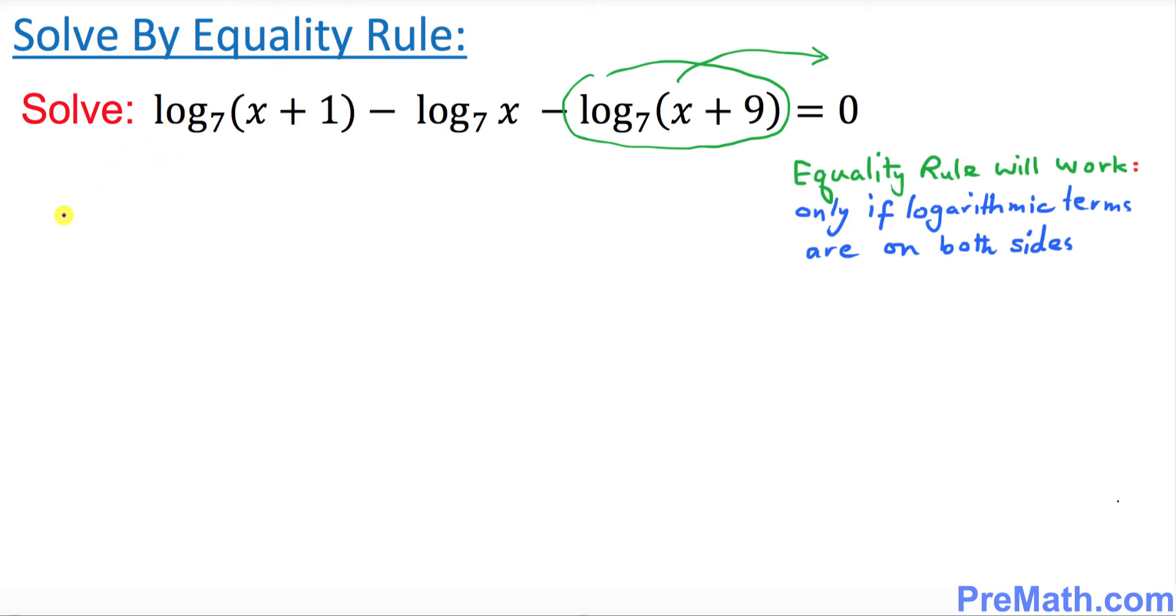This equation is going to become log₇(x+1) minus log₇(x), and when you move this negative part to this side it becomes positive log₇(x+9).